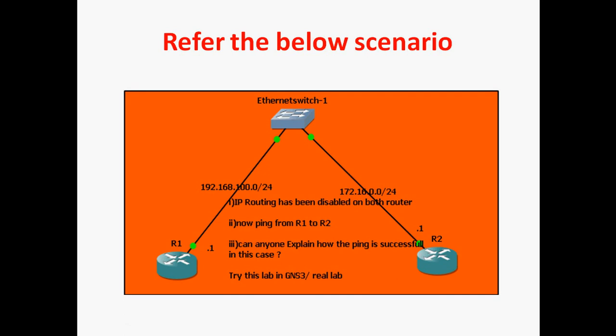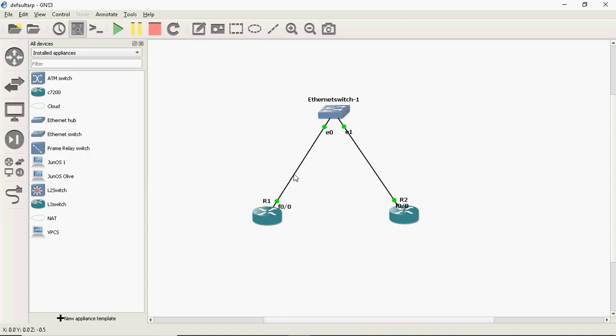Normally, host-to-host ping happens through the MAC address — with the help of the MAC address only, ping will happen. So we need to know both the Layer 3 address and the Layer 2 address. Then only ping will be successful. Let's see this in practice. I created this lab in GNS3, capturing R1 to Layer 2 switch traffic through Wireshark.